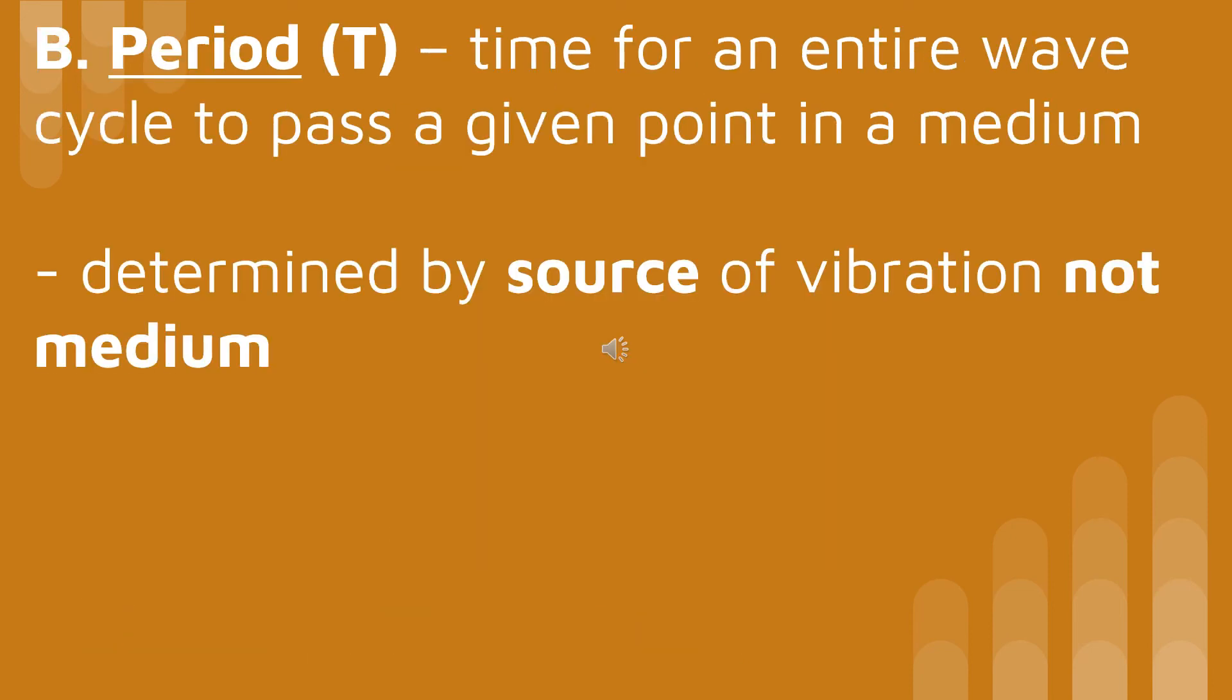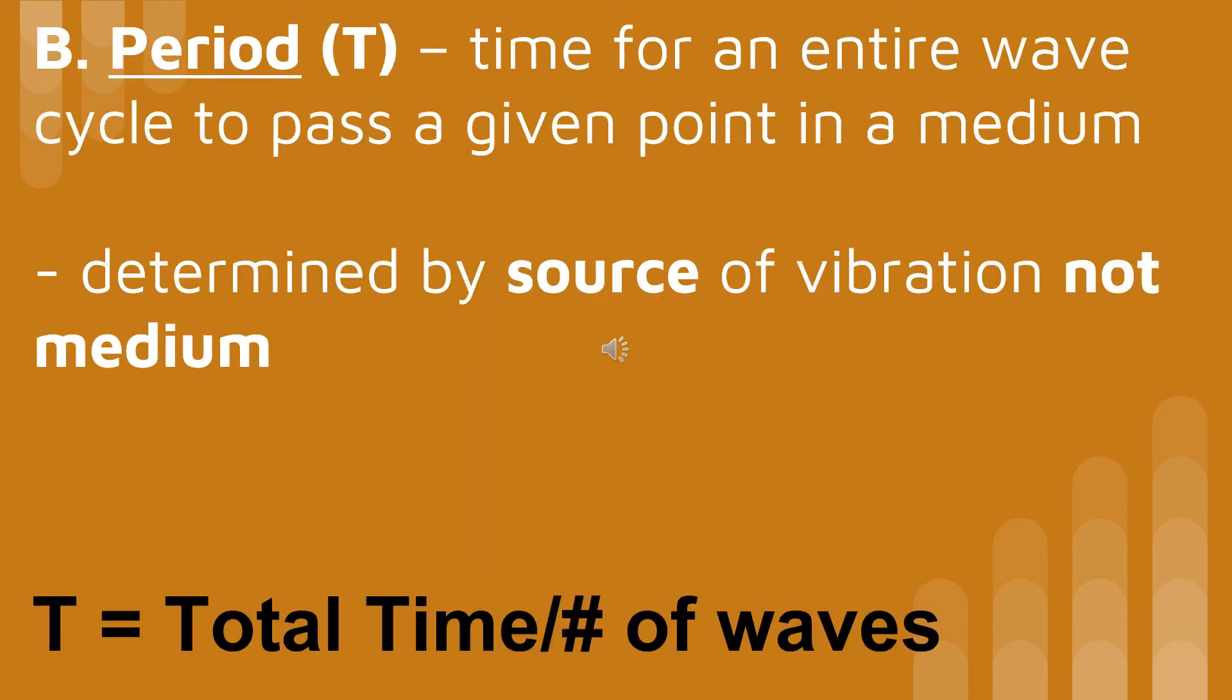Period is the time for an entire wave cycle to pass a given point in a medium. It's determined by the source of the vibration, not the medium. The period equation is total time divided by the number of waves.